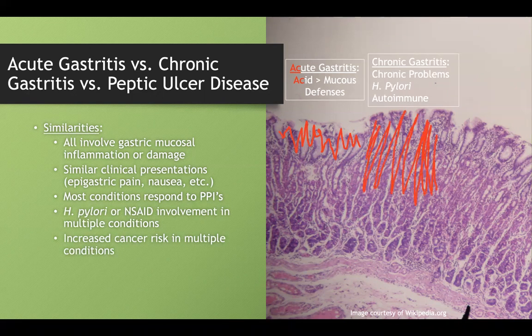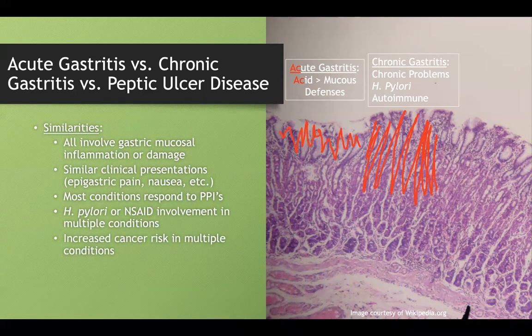Chronic gastritis gets a little deeper — it's affecting our upper glandular layer. And do you remember what's in our upper glandular layer? Our parietal cells. So this helps me remember that chronic gastritis has to do with problems with my parietal cells. And peptic ulcer disease — I think of the D in PUD as 'PU-deep.' It's very deep, goes through everything, and can cause a lot of problems.